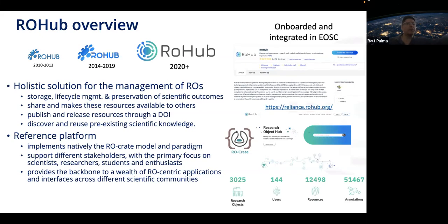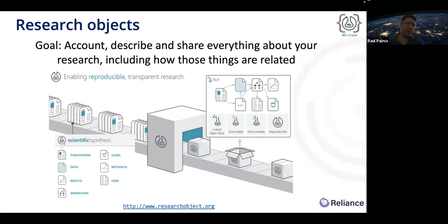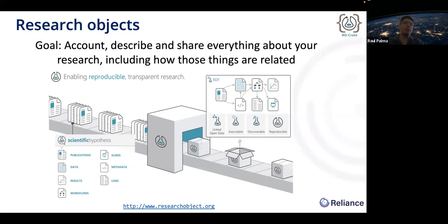Arohub itself is a reference platform because it implements natively the RO-Crate model and paradigm. It supports different stakeholders, but the primary focus is always on scientists, researchers, students, and anyone enthusiastic about science. It's considered a backbone for a wealth of RO-centric applications and interfaces across different scientific communities. To understand the platform better, we need to go into detail about what research objects are. This definition started around 2009 and evolved into what is now called the RO-Crate. The main goal of the research object is to account, describe, and share everything about your research, including how things are related to each other — like a box where you put everything connected to your research.